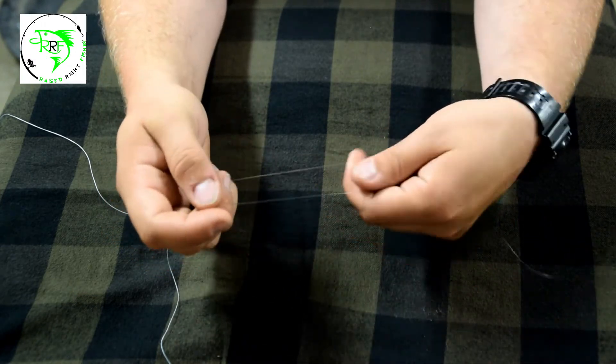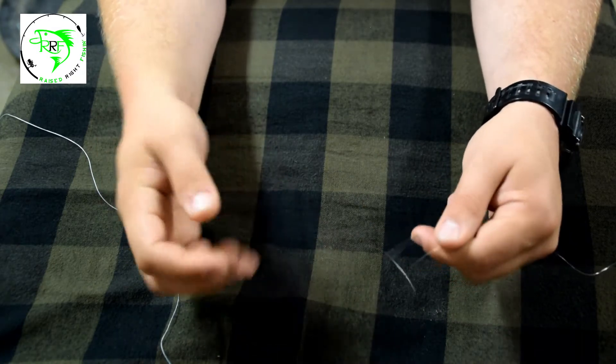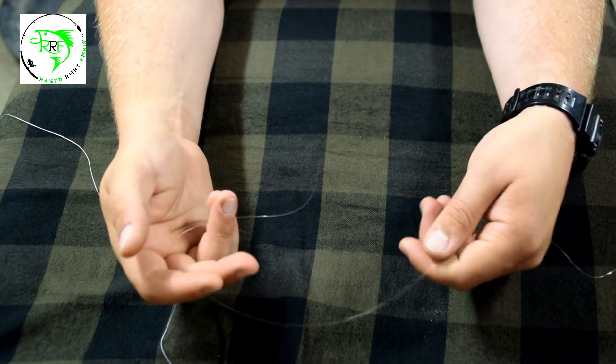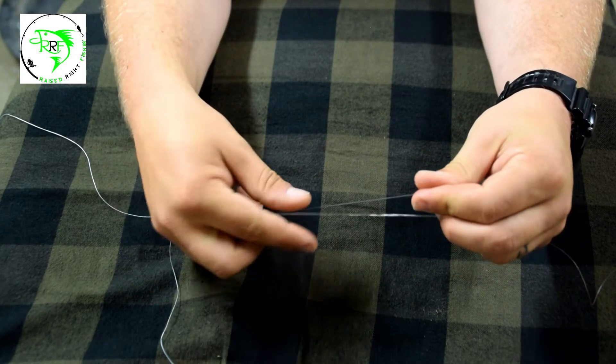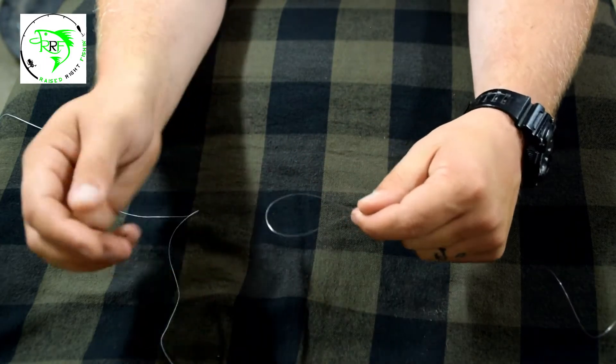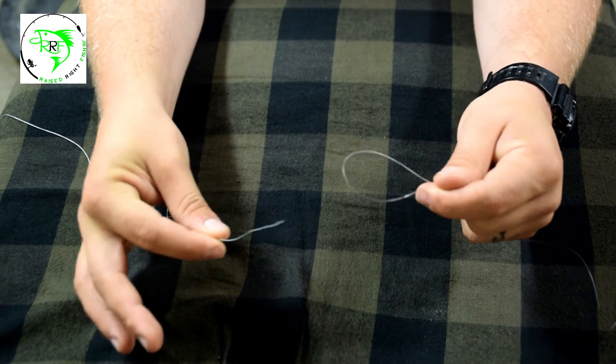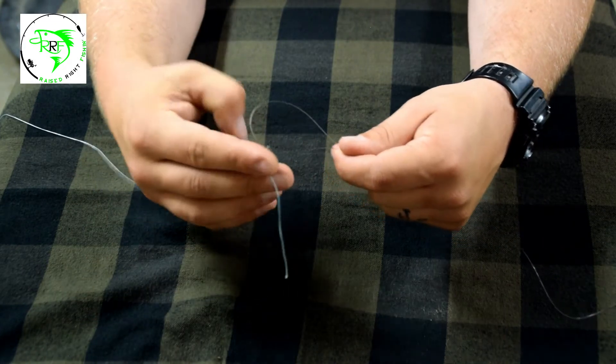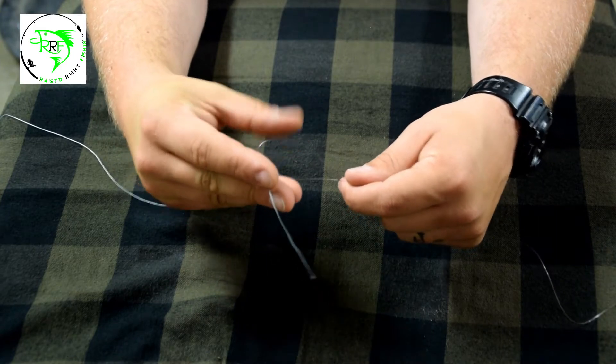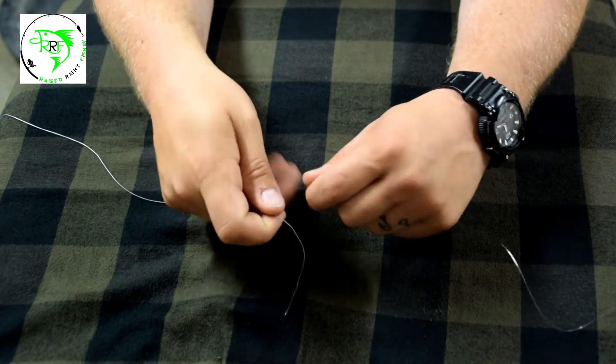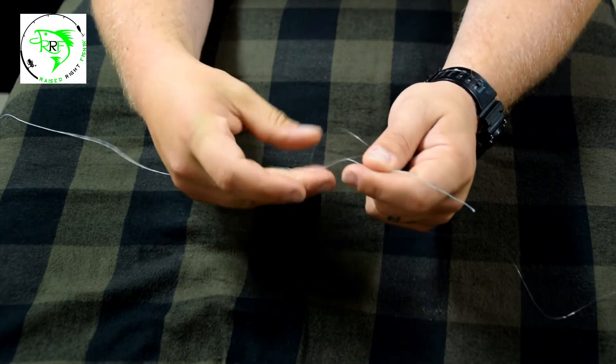Without further ado, let's go into tying the line to line. This is the modified Albright knot. What we're going to do is double our leader material, make a loop, and leave you plenty of space here. Then you're going to take our braid and go into that loop. Again, give yourself plenty of tail end here.